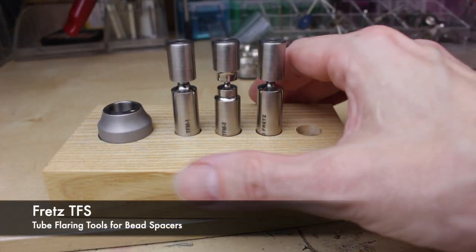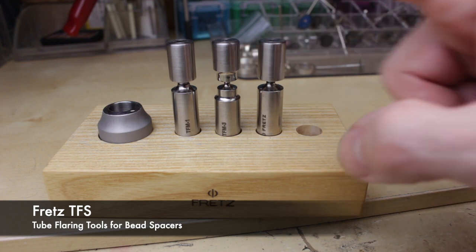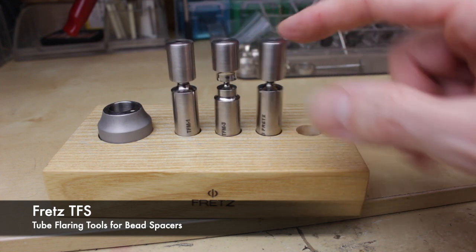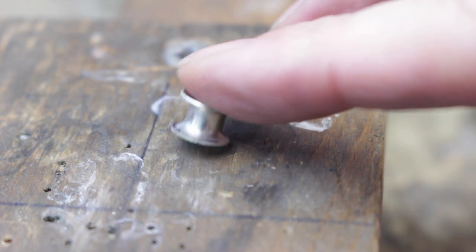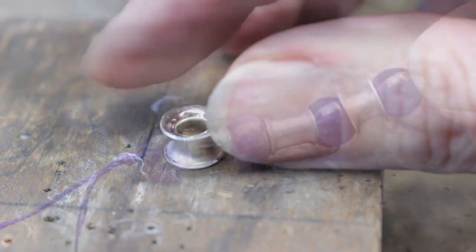This is the FRETS TFS tube flaring tool for bead spacers. So what does it do? Well, it makes little flared beads or spacers for use on bracelets and necklaces.